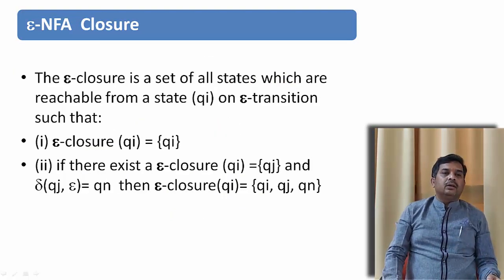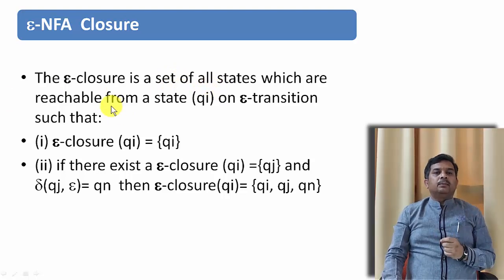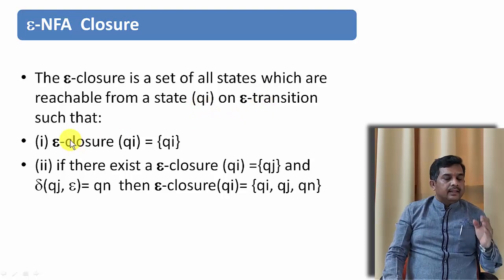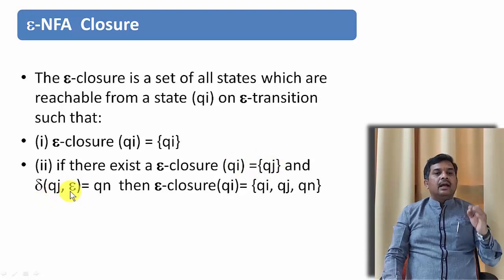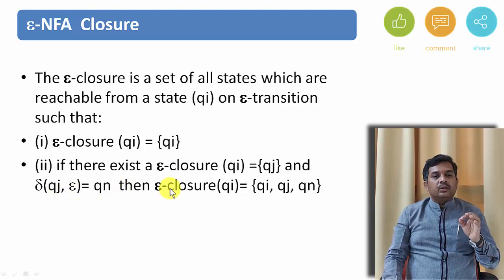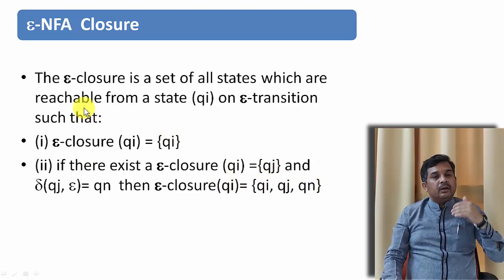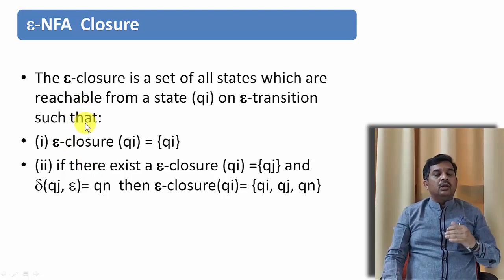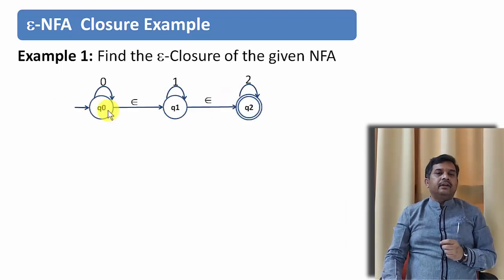Let us see one more thing under epsilon-NFA that is called epsilon closure. Epsilon closure is a set of all states which are reachable from the state Q1 on epsilon transition. There are two properties for that. First property is epsilon closure of any state is the same state. And apart from that if there exists epsilon closure of QI that is QJ, then on QJ again we have to take epsilon move. And let it be QN, then epsilon closure of QI will be QI itself then QJ and then QN. We need to know epsilon closure because in our next video we are going to use epsilon closure to find some other problems also. So let us try to find epsilon closure of a given problem.